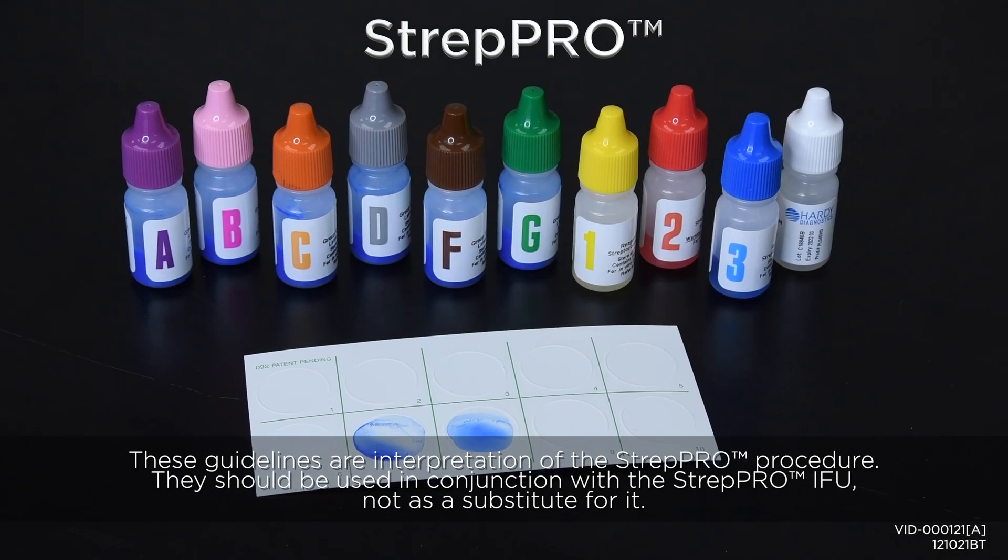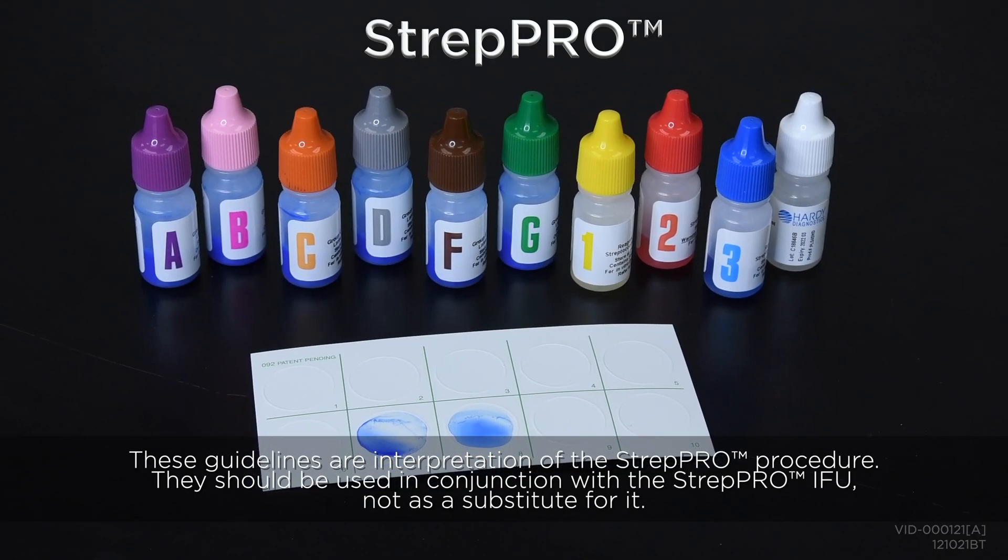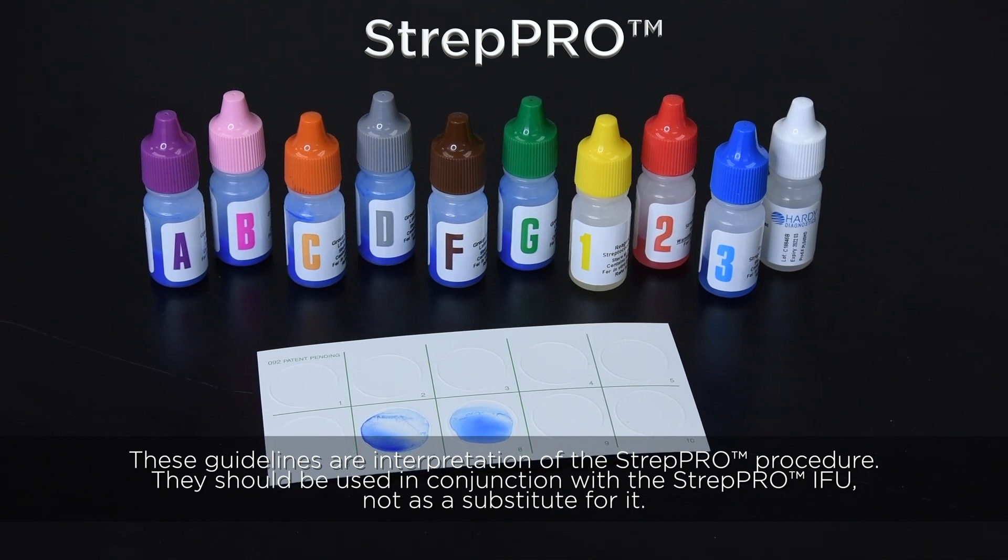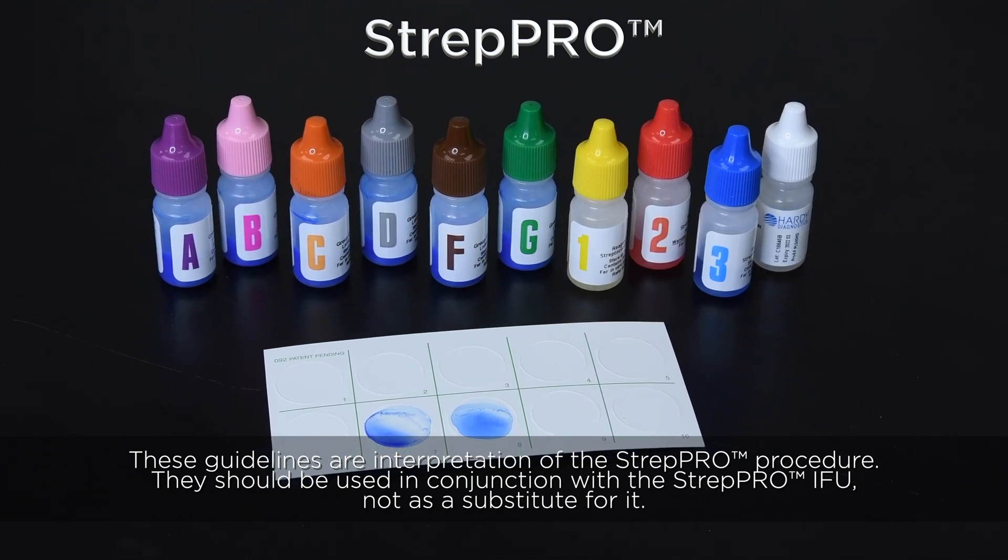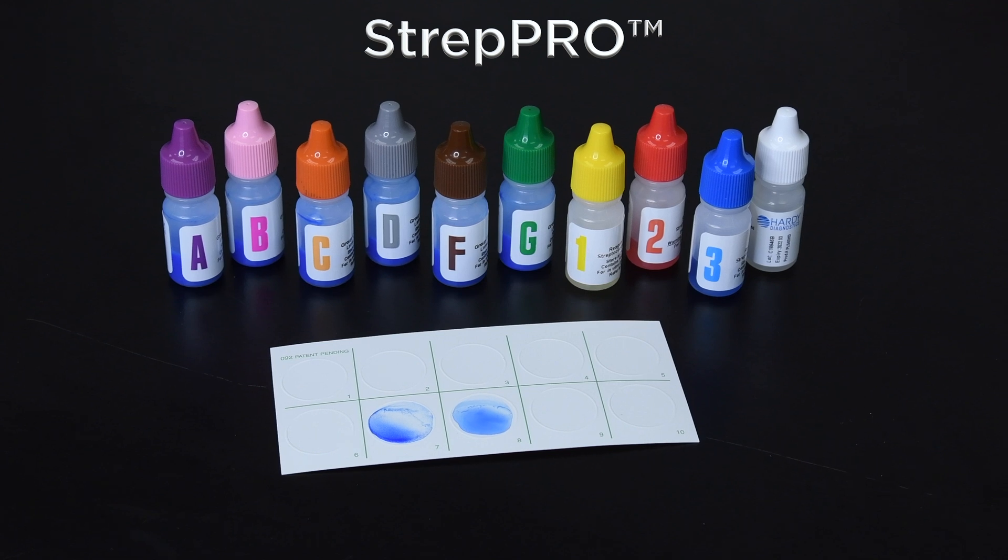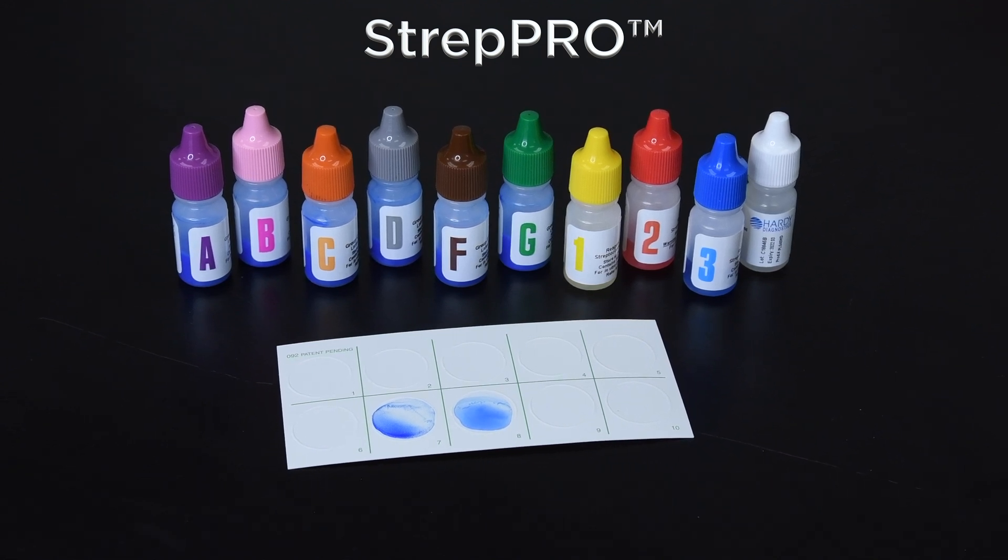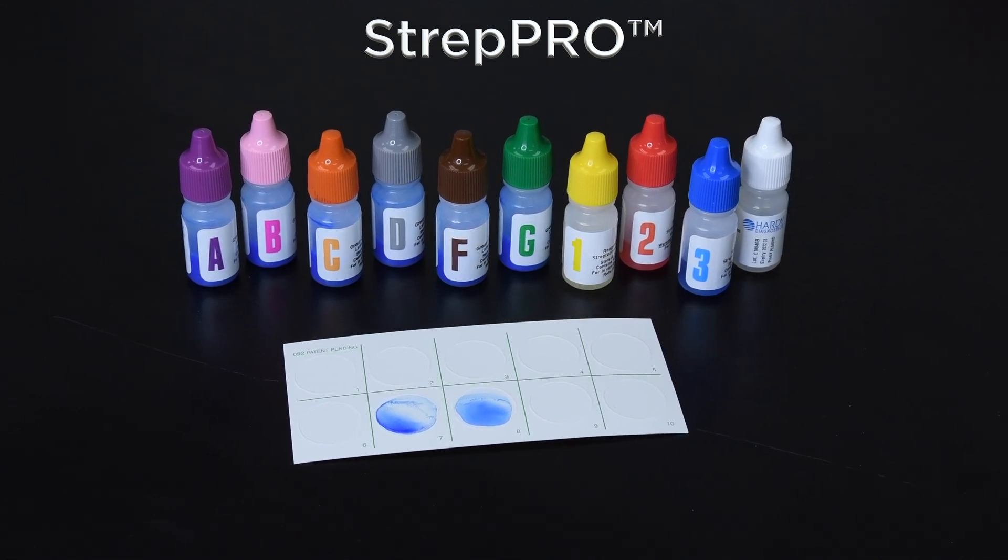Hardy Strep Pro is a rapid latex agglutination kit for the serogrouping of streptococci. It will identify the traditional Lancefield groups of strep into groups A, B, C, D, F, and G.